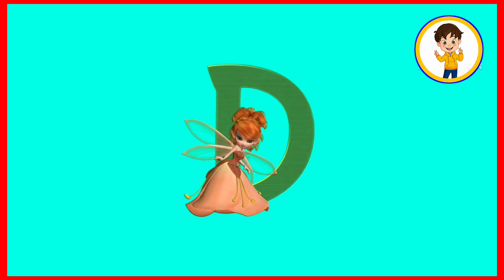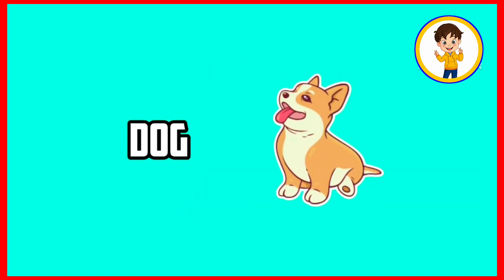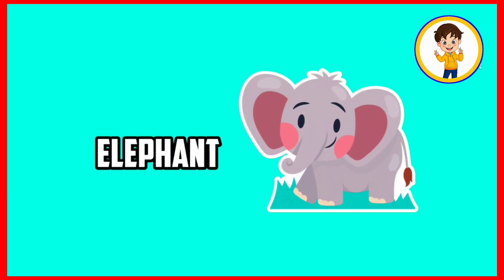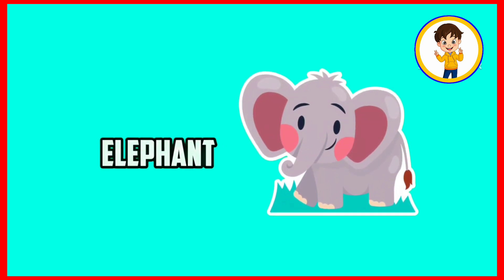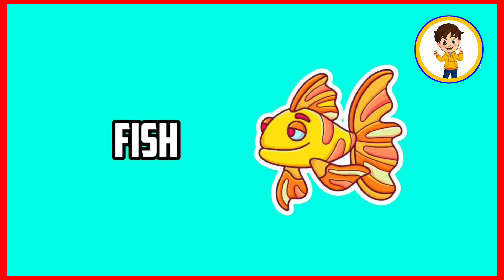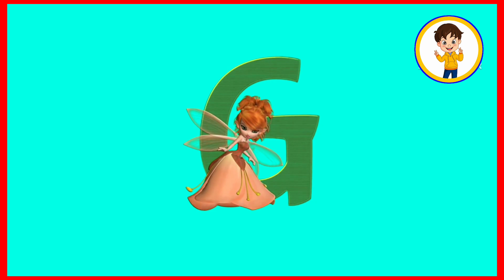D. D is for dog. Dog means kutta. E. E is for elephant. Elephant means hathi. F. F is for fish. Fish means machli.